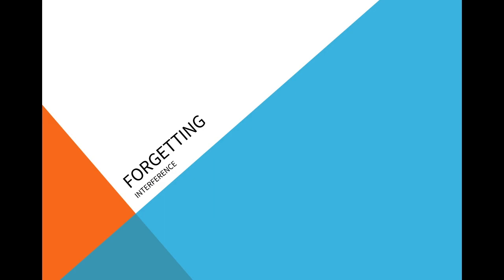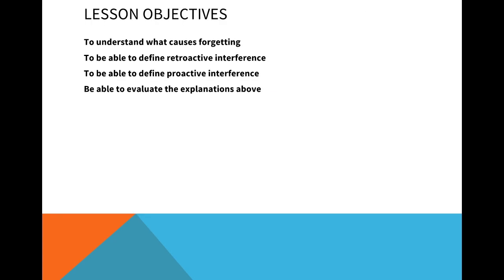Hello and welcome to my video on the memory topic, specifically focusing on the forgetting subtopic, and even more specifically focusing on interference — the interference explanation of forgetting. There are two explanations, with retrieval failure being the other one, and I'll obviously do a separate video for that. So what you need to know: what causes forgetting, these two specific terms — retroactive and proactive interference — and you need to be able to evaluate these theories of interference.